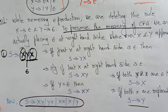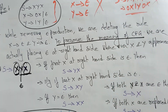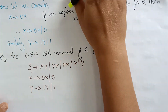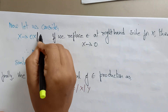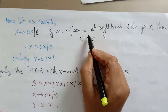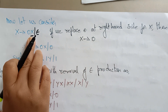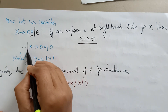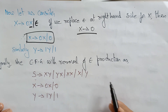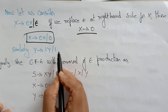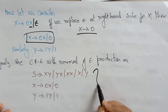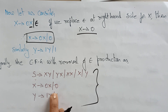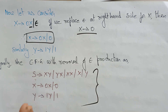Now consider the remaining productions. For X determines 0X or Epsilon: if we replace Epsilon at the right-hand side for X, we get X determines 0. So the new production is X determines 0X or 0. Similarly, Y determines 1Y or 1. Finally, the context-free grammar with removal of epsilon productions is rewritten with these production rules. These are equivalent to the original rules with Epsilon but now without any epsilon productions. Thank you.